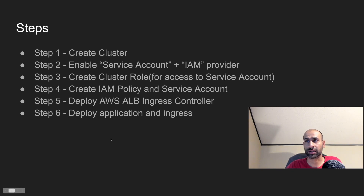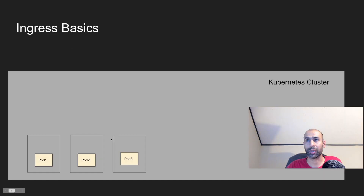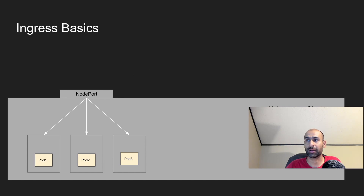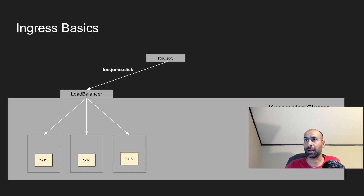Let's quickly revise some ingress basics and look at our demo application. Suppose we have an application consisting of three pods. When we want traffic to reach it, we configure a ClusterIP service. For external traffic, we use a NodePort type service which exposes a node port. Then using Route 53, we can map like foo.jomo.click to the load balancer, which could be a NodePort service, and traffic would be routed to the multiple pods.